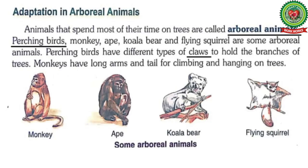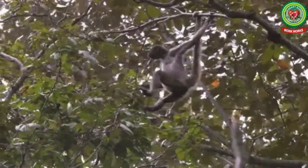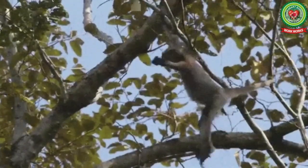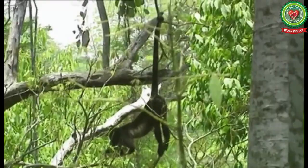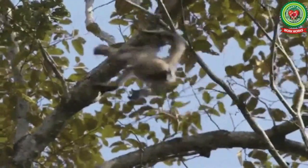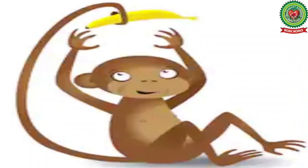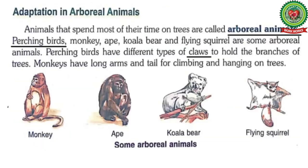Monkeys have long arms and a tail for climbing and hanging on trees. The function of long arms in monkeys is that they use their arms to climb on the branches of trees, and they use their tail to hold objects and to swing from branches. They also use their tail to hold food.